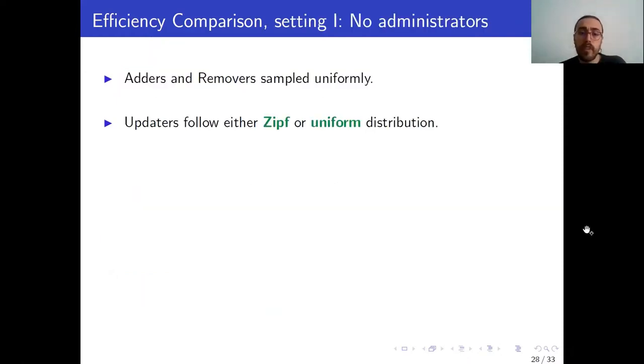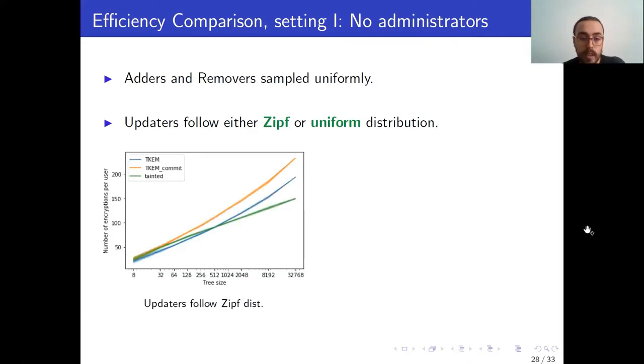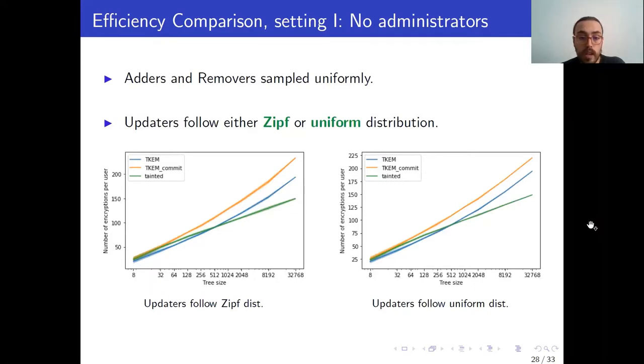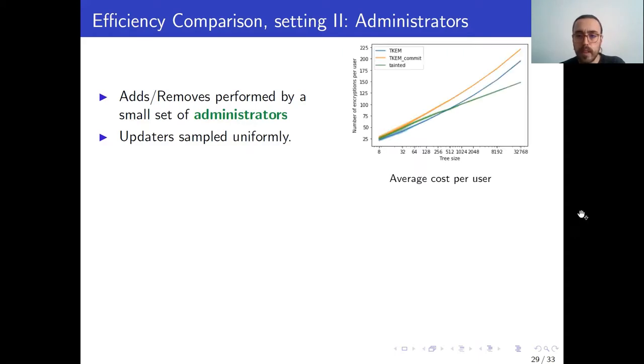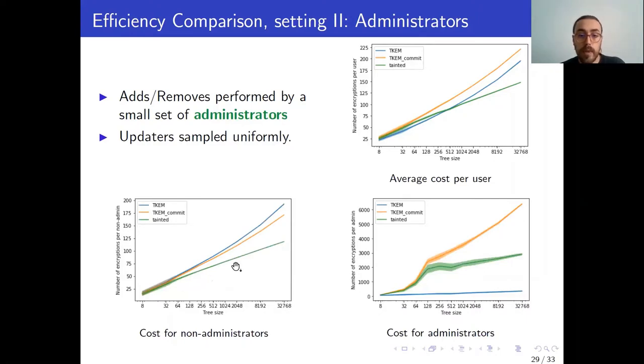We compare the two protocols in two different settings. The first one is that of no administrators, where we assume that adds and removes are performed by all users uniformly. And here we distinguish two cases, depending on whether the distribution that represents how often users update is a Zipf or uniform. In both cases, however, we get similar results, which show that Tainted TreeKEM performs better asymptotically. The second setting we consider is that where adds and removes are performed exclusively by a small set of administrators. And here we assume everyone updates with the same probability. The overall results are similar, Tainted TreeKEM is still performing better asymptotically, but what's interesting about this case is that it highlights a trade-off between the cost for non-administrators on the left, which is much better for Tainted TreeKEM, versus the cost for administrators that now bear most of the load.